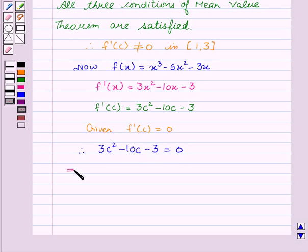This implies c = [-b ± √(b² - 4ac)] / 2a, which is -(-10) ± √(100 - 4×3×(-3)) / (2×3).